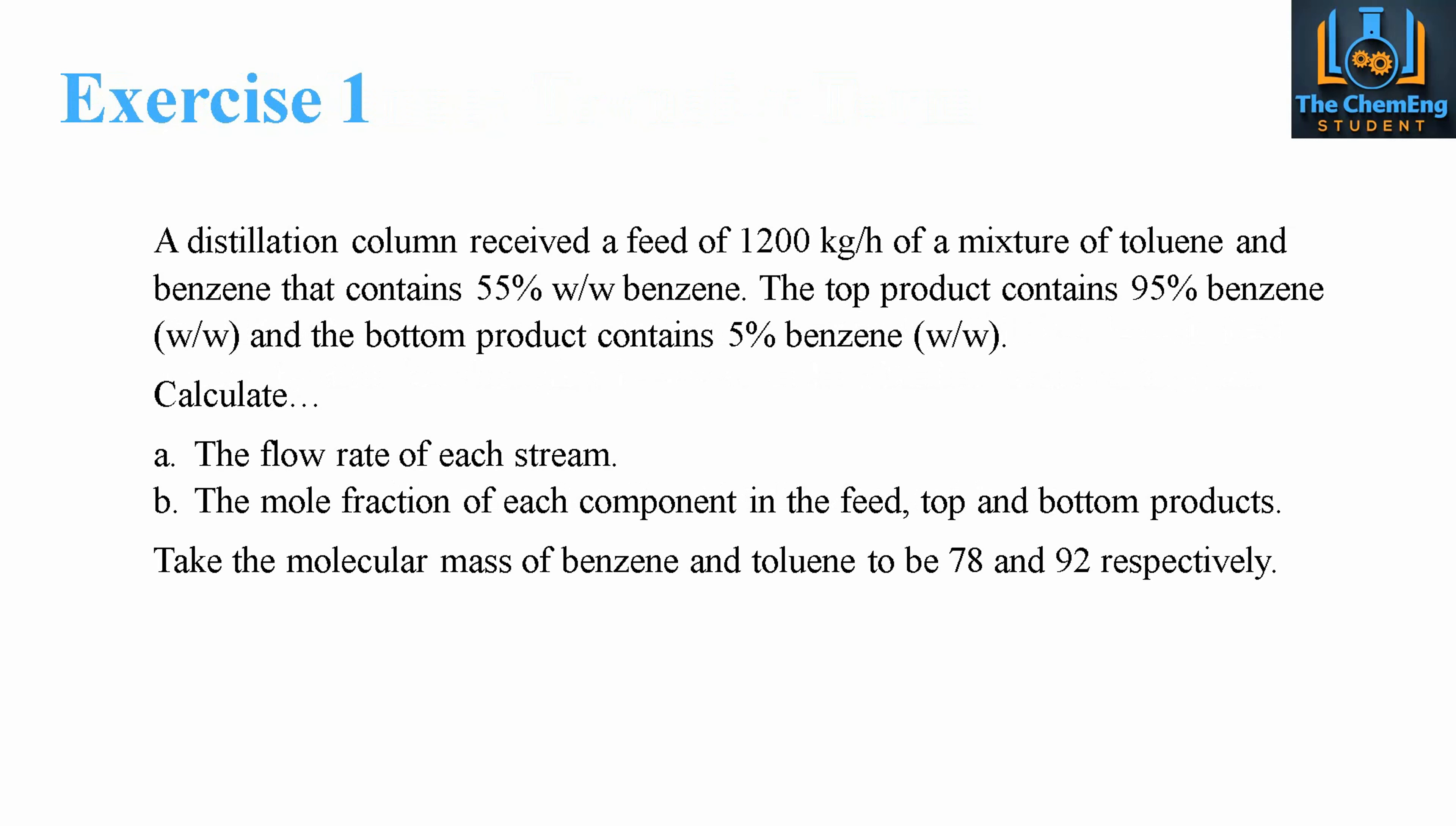So if we look at a working exercise, now this is for non-reacting systems. We have a distillation column that receives a feed of 1200 kilograms per hour, and it's a mixture of toluene and benzene that contains 55% weight per weight of benzene in the feed. Now the top product contains 95% benzene weight per weight, and the bottom product contains 5% benzene weight per weight. Now we need to calculate the flow rate of each of the streams, and then the mole fraction of each of the components within the feed, the top product, and the bottom product. It gives us molecular masses of benzene to be 78 and toluene to be 92.